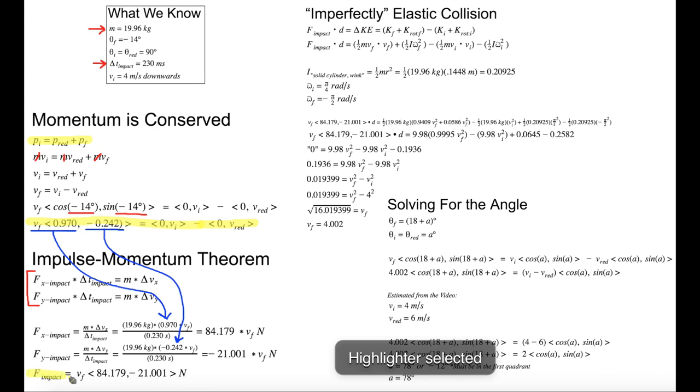The resulting force vector with both directions is shown here. Now we know that F dot d equals change in kinetic energy. We have F and we have d, which is practically 0 since the impact didn't displace much of the rock. But what about change in kinetic energy? It's not just 1 half mv squared, because the rock is also spinning, so delta KE is seen in this equation.